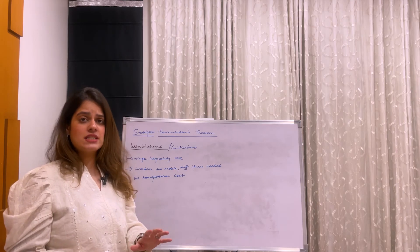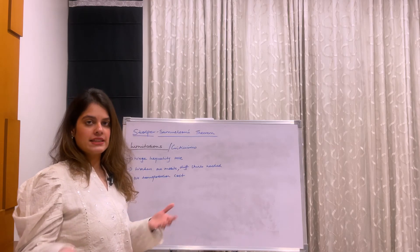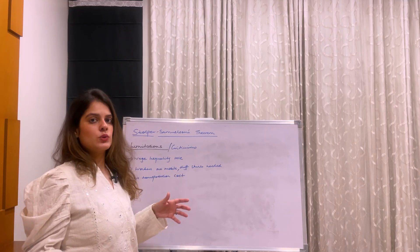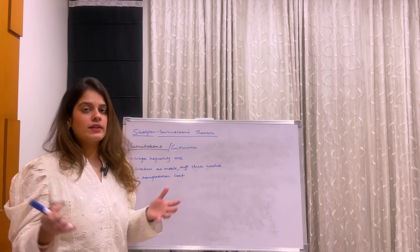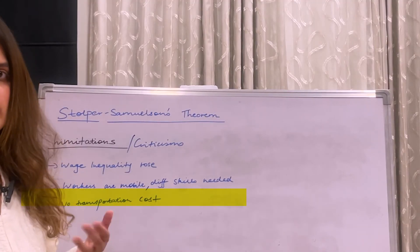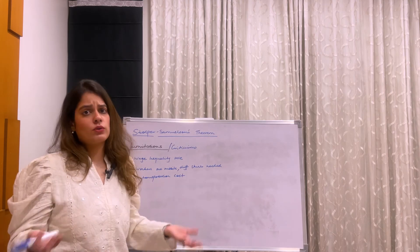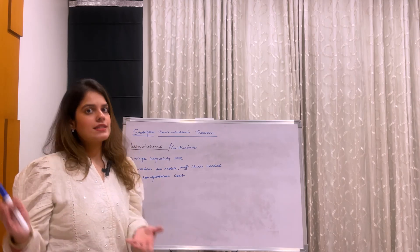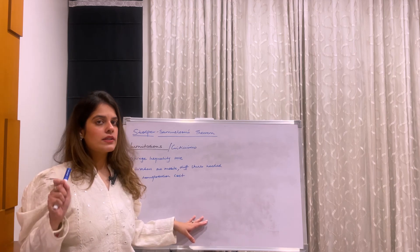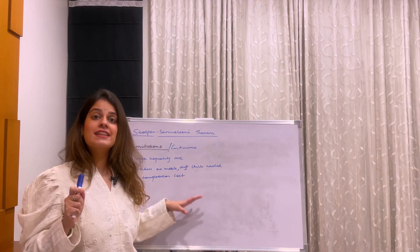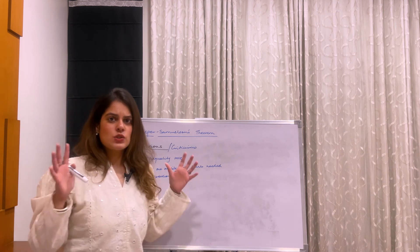Lastly, let's look at the limitations and criticisms. In economics even the best theories have limitations. First, we assumed wage inequality would fall due to this theorem, but in practice — for example in Latin America — wage inequality actually rose. Second, we assumed workers are mobile between industries, but the skills required in steel versus cloth production are very different; workers may lack the knowledge to shift easily. Third, no transportation cost was assumed, which is very unrealistic. As a useful tip: the limitations in economics are basically the assumptions turned around.